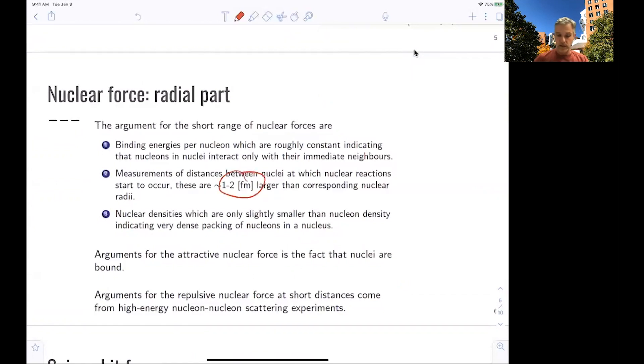And then the measurement of distances between the nuclei, which nuclear reactions start to occur, those are in the order of 1 to 2 femtometers larger than the corresponding radii. The nuclear densities, which are only slightly smaller than the nucleon densities, indicating very dense packing. So again, they are already very densely packed. You cannot push them much further.